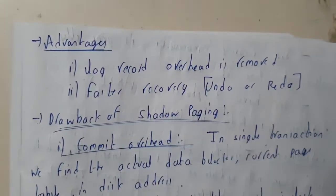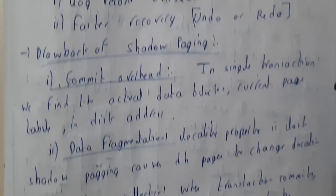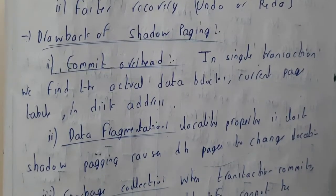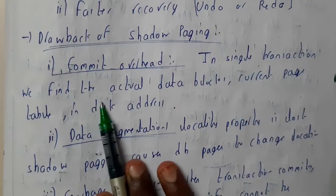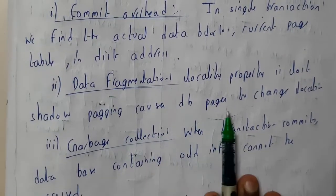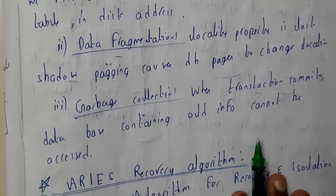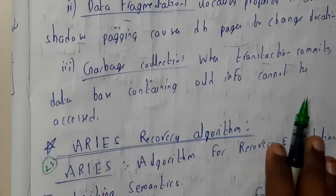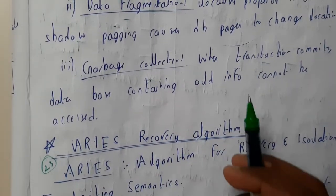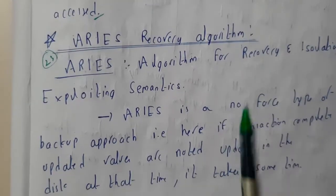The advantages of shadow paging are: log record overhead is removed, and fast recovery is possible. The drawbacks include commit overhead — in a single transaction, finding the actual data blocks on disk can be a problem. Data fragmentation occurs because data can be stored at random places, causing fragmentation. Also, garbage collection is needed since after a transaction commits, old information is replaced by new information and the old data becomes inaccessible.